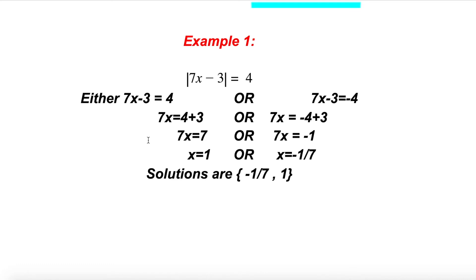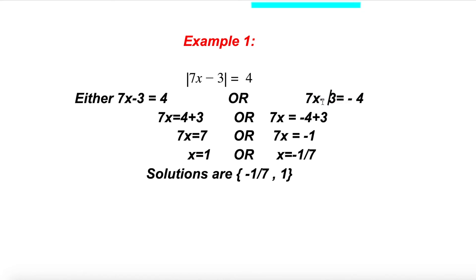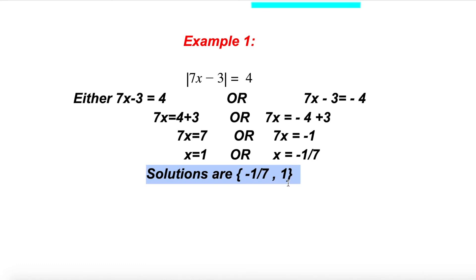Let's solve Example 1: the absolute value of 7x minus 3 equals 4. Since 4 is positive, we split into two cases. Either 7x minus 3 equals 4, giving 7x equals 7, so x equals 1. Or 7x minus 3 equals negative 4, giving 7x equals negative 1, so x equals negative 1 over 7. The solutions are negative 1 over 7 and 1.